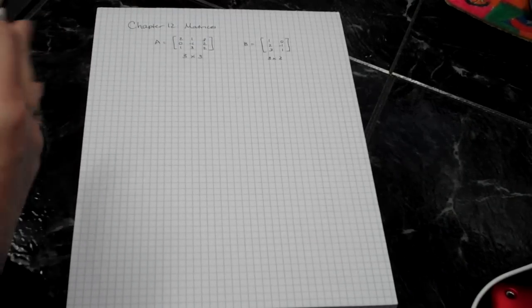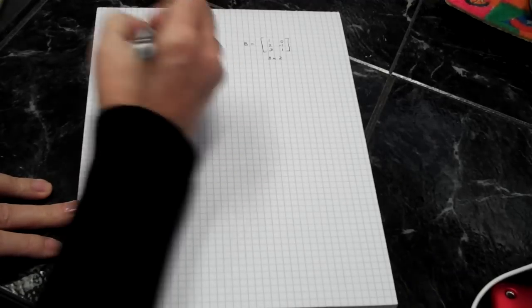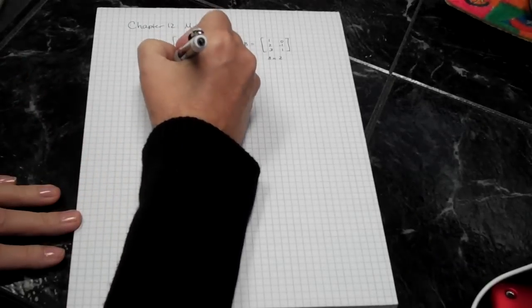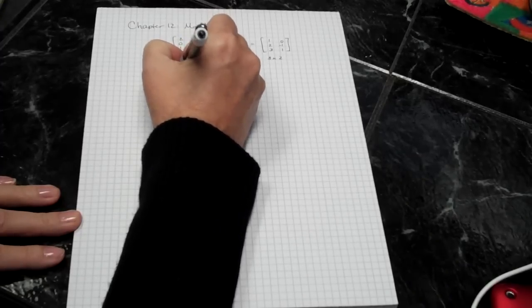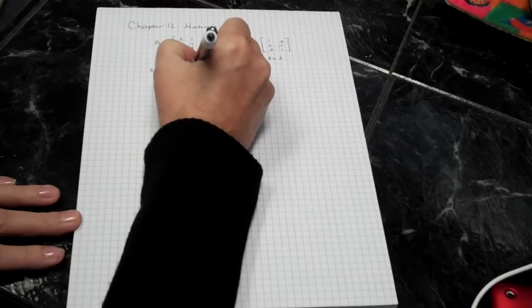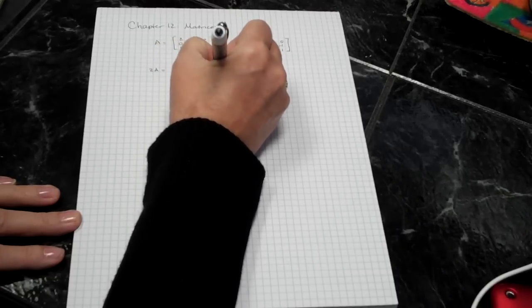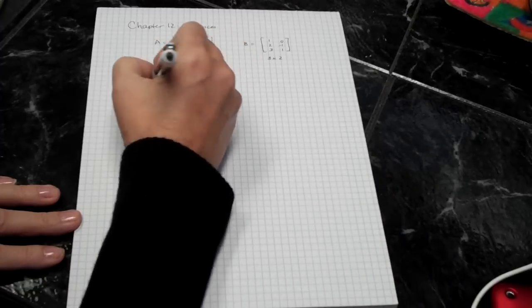If I have something like this, I can do matrix arithmetic. For instance, if I wanted to say 2A, that means I multiply every entry by 2. So in this particular case, I end up with 4, 0, 2, 2, negative 2, 6, 6, 4, and 4 is the result of that.